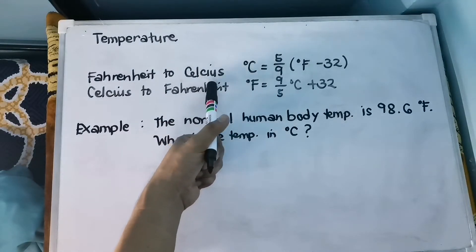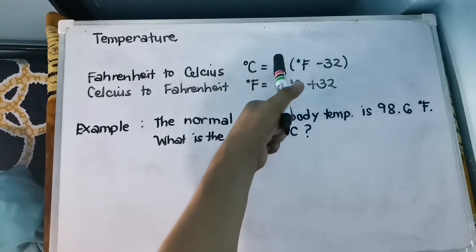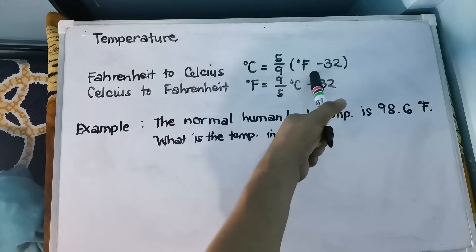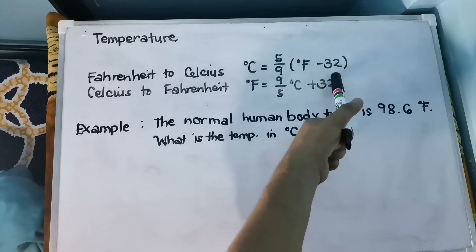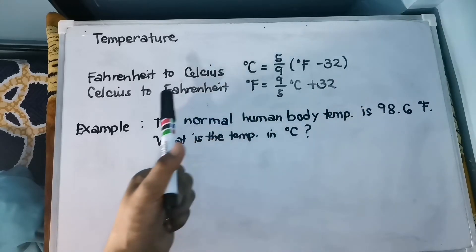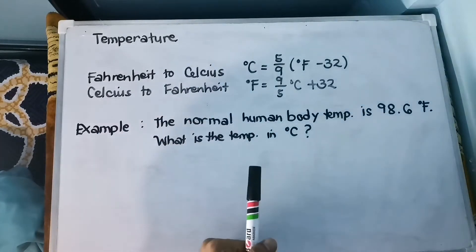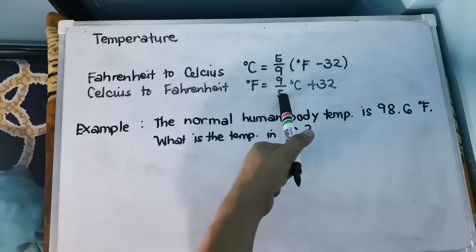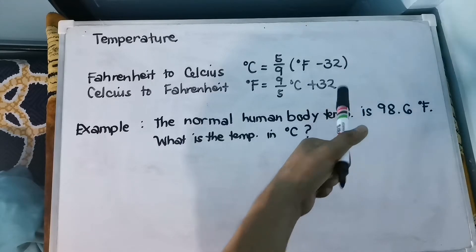We are going to use the conversion Fahrenheit to Celsius, given by the formula: degree Celsius equals 5/9 times the quantity (degree Fahrenheit minus 32). When we convert Celsius to Fahrenheit, the formula is: degree Fahrenheit equals 9/5 times degree Celsius plus 32.